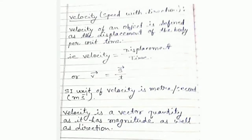Moving ahead, we will now know velocity — the next physical quantity. Velocity is speed with direction. Velocity of an object is defined as the displacement of the body per unit time. Mathematically, velocity = displacement / time, or V⃗ = S⃗/T. Since it is a vector quantity, we put arrow marks over V and S. The SI unit of velocity and speed is the same, that is meter per second, whereas velocity is a vector quantity as it has magnitude as well as direction.